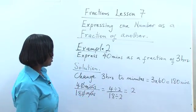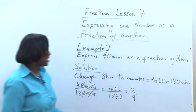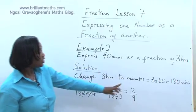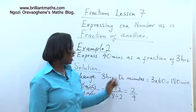And 18 divided by 2 is equal to 9. That goes to say that 40 minutes is 2 ninths of 3 hours. Let's check if that is true.